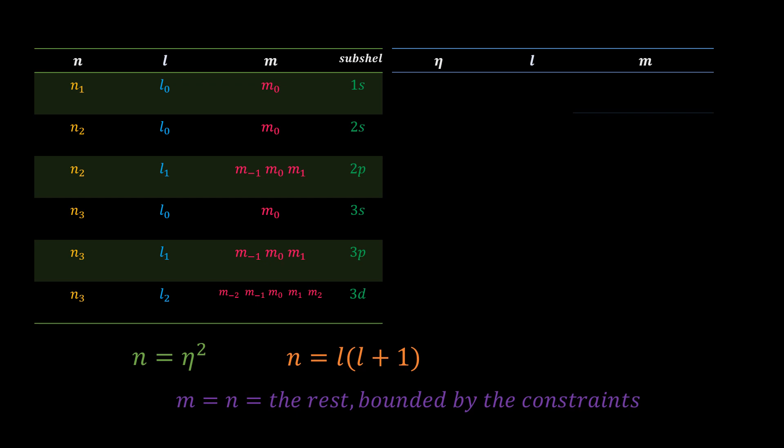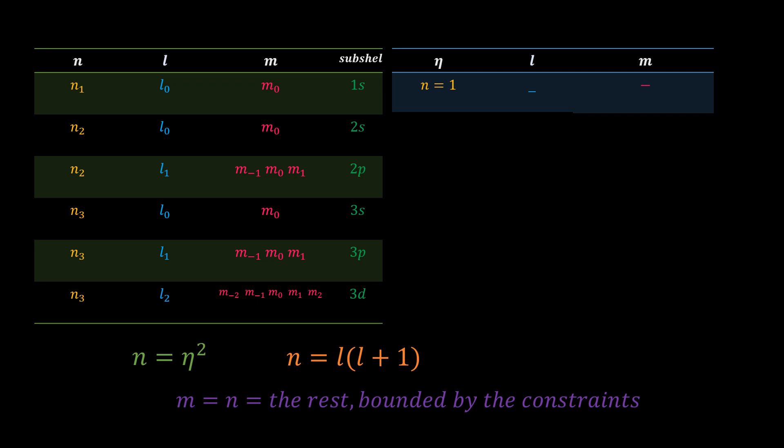So for eta equal to 1, n is equal to 1, and we place that under the eta column. So l has to be 1 minus 1, which is 0. So putting l equal to 0 in the equation below produces n equal to 1. This orbit has already been occupied. So we have a dash under l and consequently a dash under m.